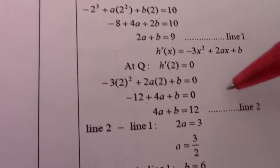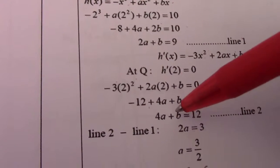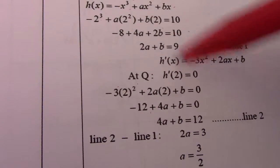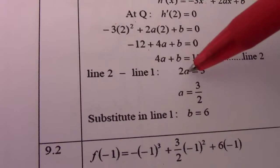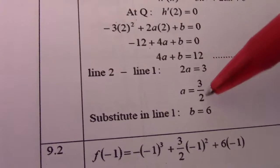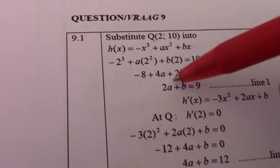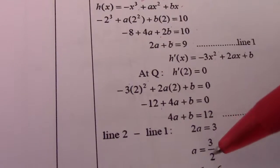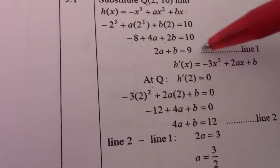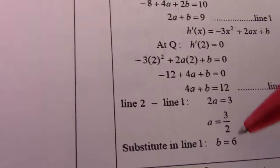From here, line 2 minus line 1: 4a - 2a gives 2a, b - b = 0, and 12 - 9 = 3. So 2a = 3, meaning a = 3/2. Substituting back into line 1: 2(3/2) + b = 9, so 3 + b = 9, giving b = 6.